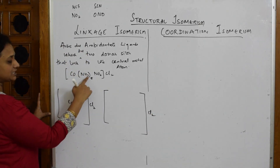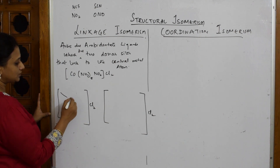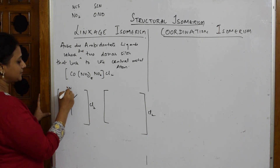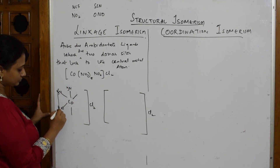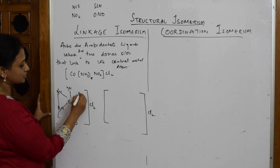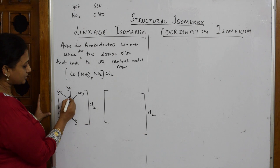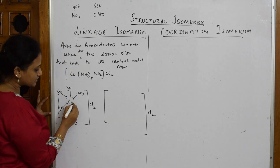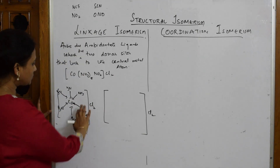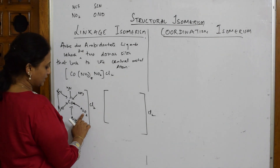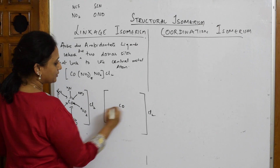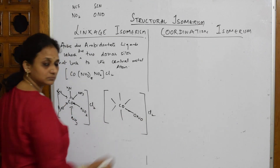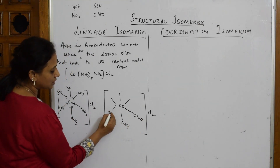For the first isomer, Co is bonded to five NH₃ groups and NO₂ linked through nitrogen, since nitrogen has the lone pair. For the second isomer, the same ambidentate ligand links through oxygen as ONO, with five NH₃ groups remaining. Everything donates to the central metal atom.